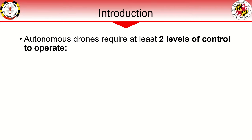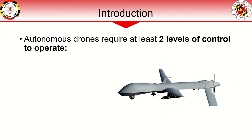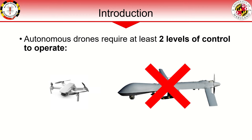There are two key levels of control going on behind the scenes in an autonomous drone. Of course, much more complex systems have many levels with specific functionality, but I want to focus on the bare minimum in order to have a drone do something useful entirely on its own.